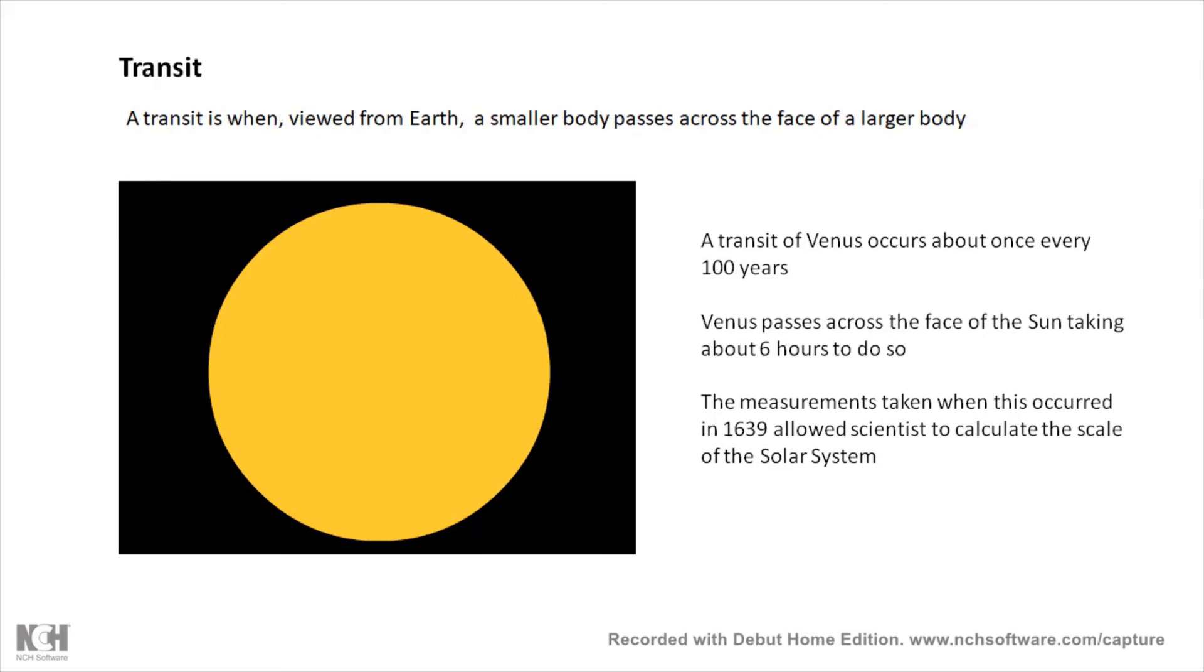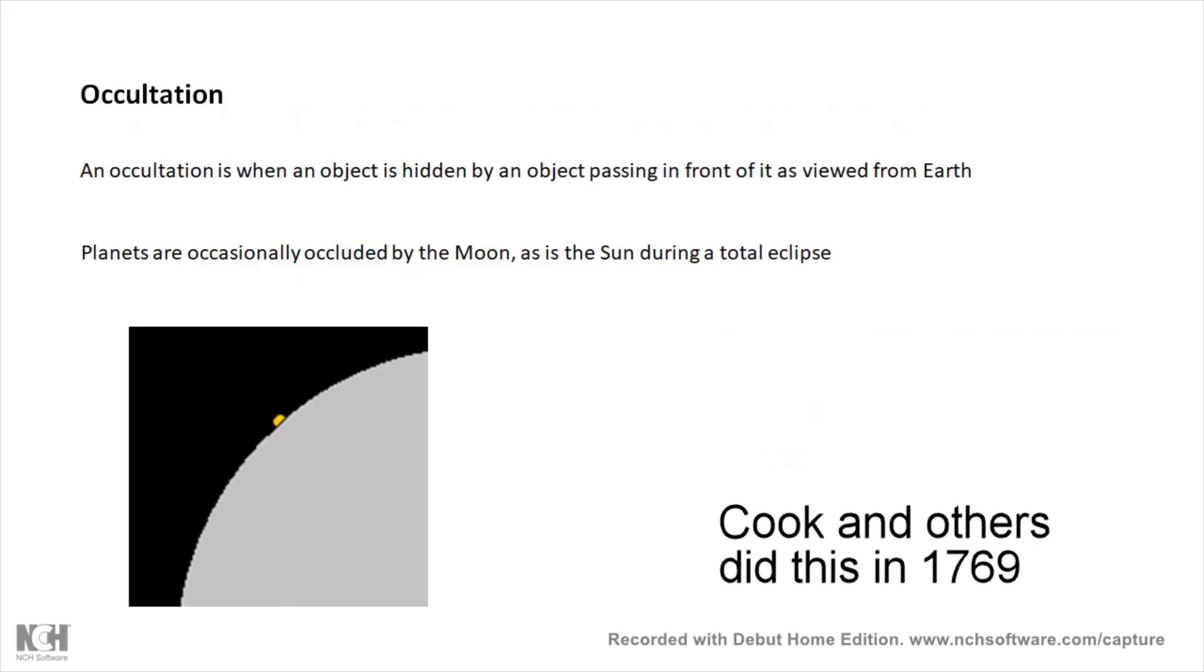Why are they important? Because if you observe a transit of Venus from the northern hemisphere and you observe the same transit from the southern hemisphere and you take some measurements, then using parallax you can actually work out the scale of the solar system. You can work out how far away the Earth is from the Sun, and if you know that then you know how far away all of the other planets are from the Sun. So the measurements taken in 1639 by amongst others Captain Cook enabled astronomers to work out the scale of the solar system, a value for one AU.